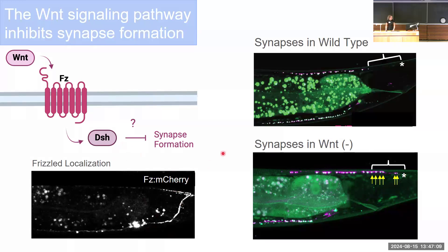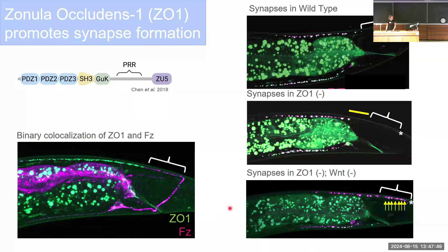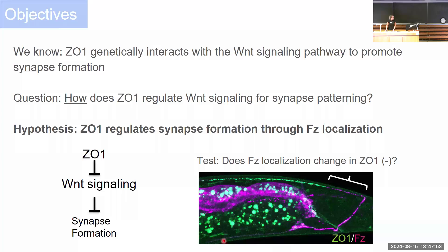Zonula Occludens is a multi-domain containing intracellular scaffolding protein. I investigated the co-localization of ZO1 and Frizzled and found they have very complementary localization with no overlap. In the loss of function of ZO1, we see the opposite of Wnt signaling — a loss of synapses in the area where Frizzled is localized. In the double mutant of ZO1 and Wnt, the double mutant masks the ZO1 single mutant phenotype and shows only the excessive synapse formation of the Wnt signaling phenotype. This clear epistatic relationship shows that ZO1 functions genetically upstream of Wnt signaling, though we don't yet know how ZO1 regulates Wnt signaling for synapse patterning.